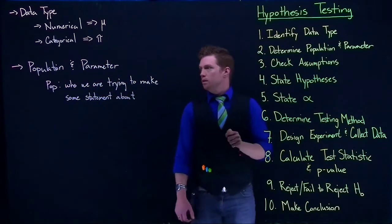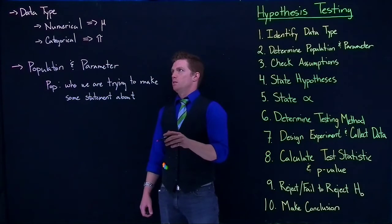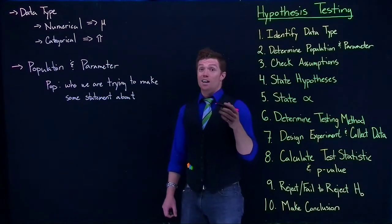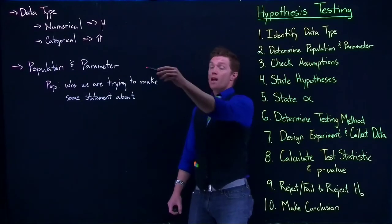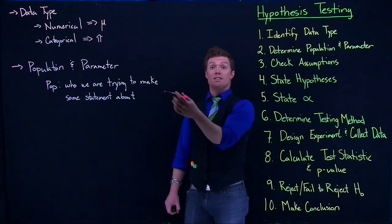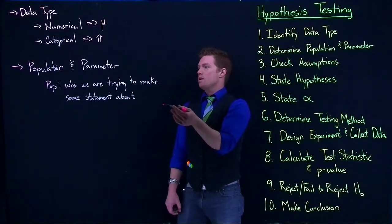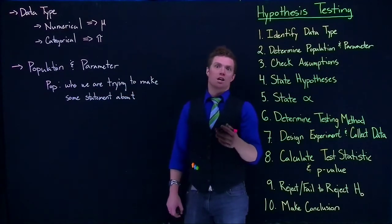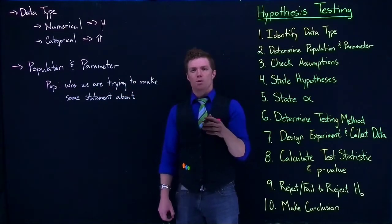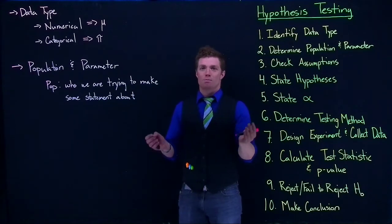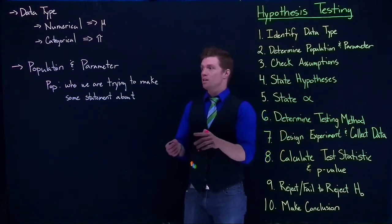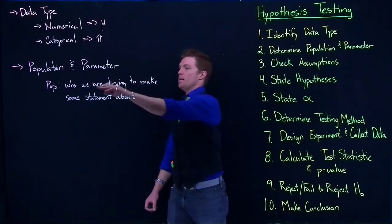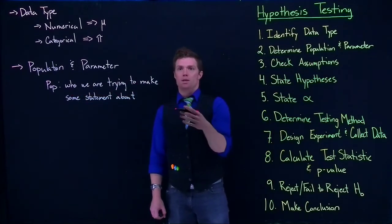If we're dealing with dogs and we're trying to figure out how fast they can run, our parameter would be the true mean speed that they can run, and then the population would be these dogs. Now we probably wouldn't be talking about just all dogs in general. Maybe you're really interested in very fast dogs, like maybe greyhounds or whippets. But we need to identify who that population is.